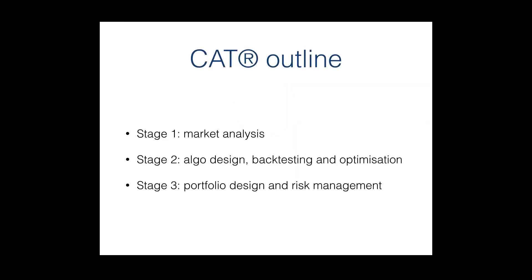The CAT, or Certified Algorithmic Trader program, consists of three levels or three stages. Within the first stage, we work exclusively with market analysis. Second, we work with algorithm design — we learn how to backtest and how to optimize. And finally, at the third stage, we learn portfolio design, risk management, and, of course, robustness assessment.